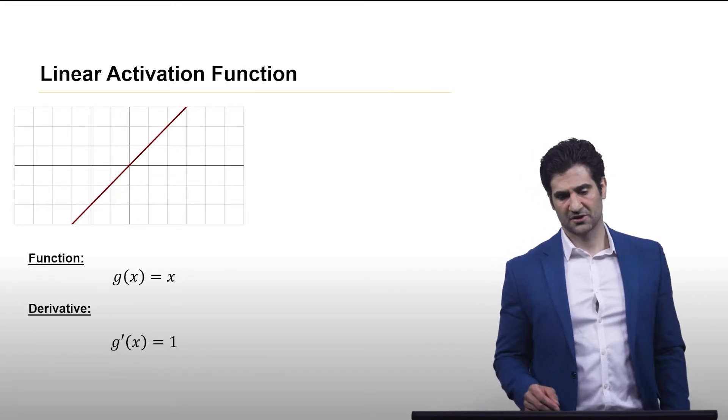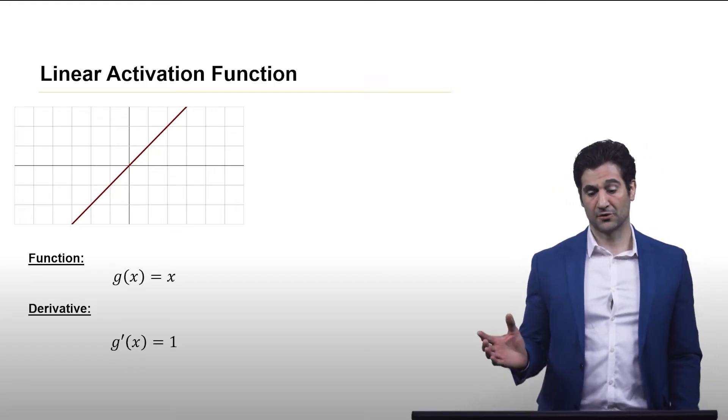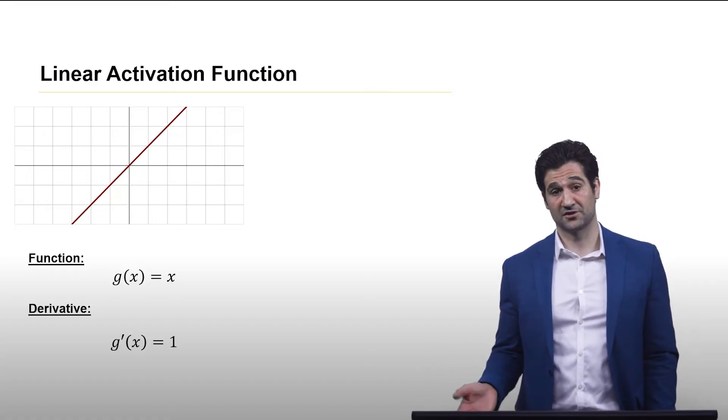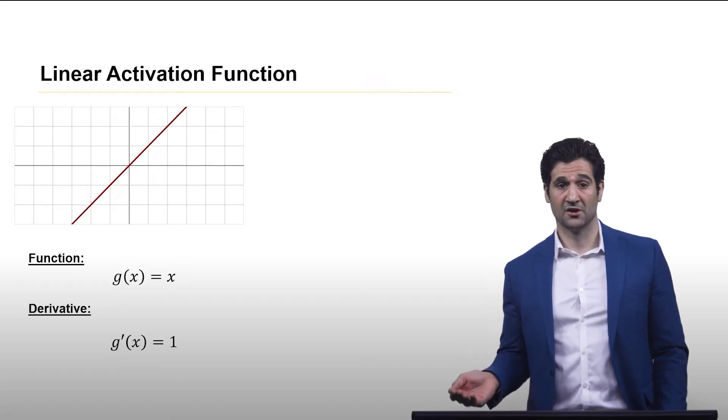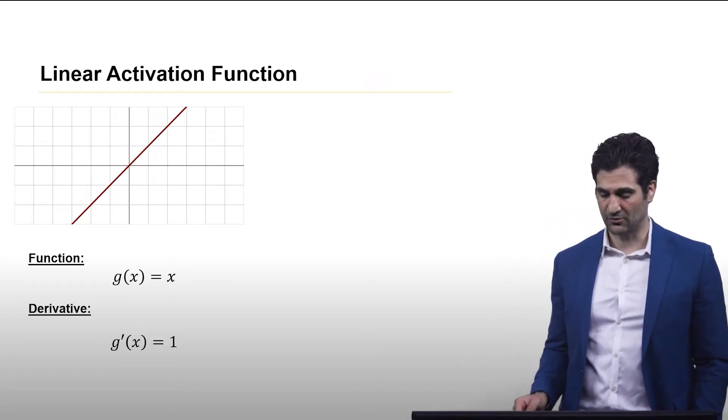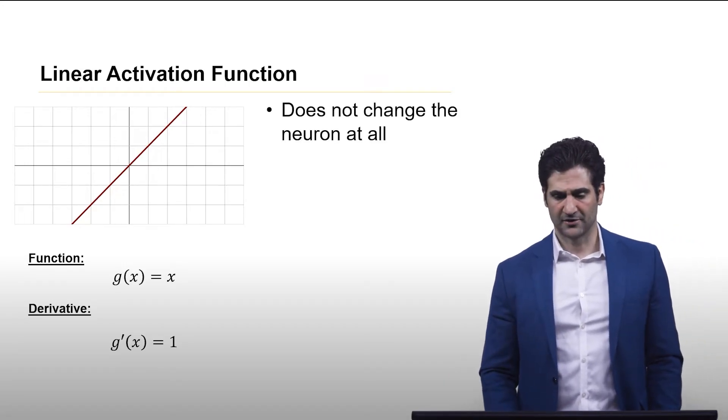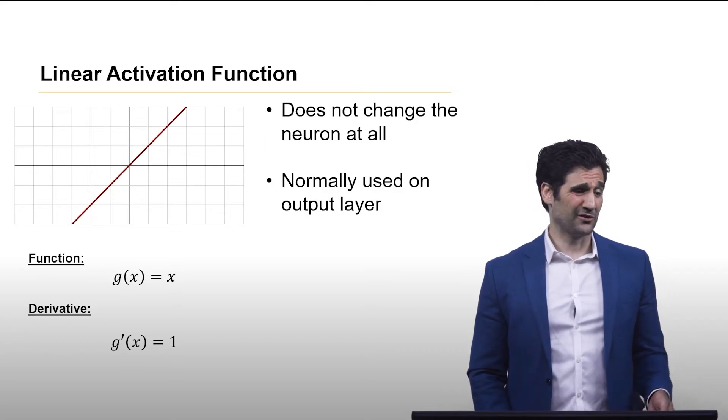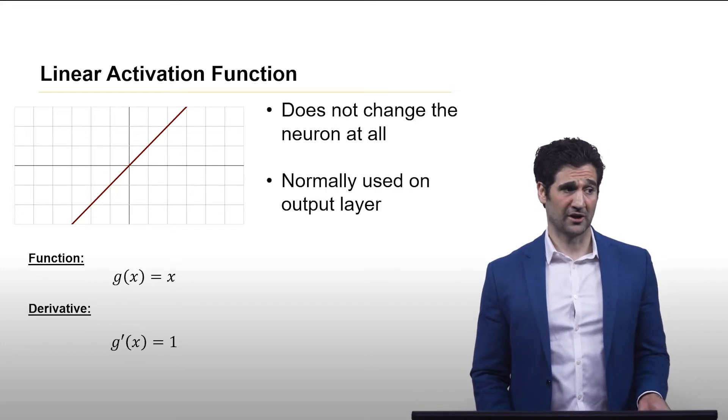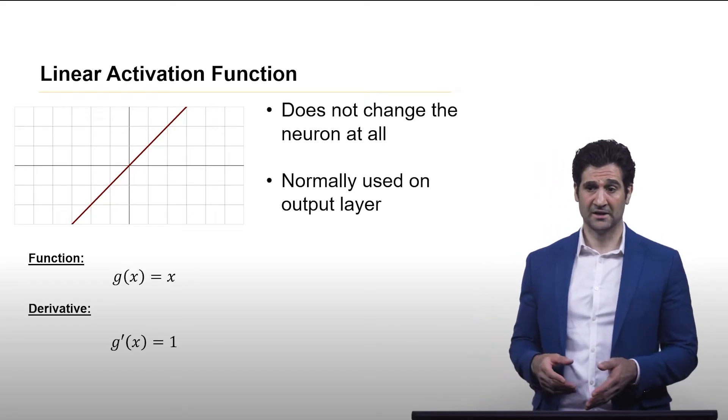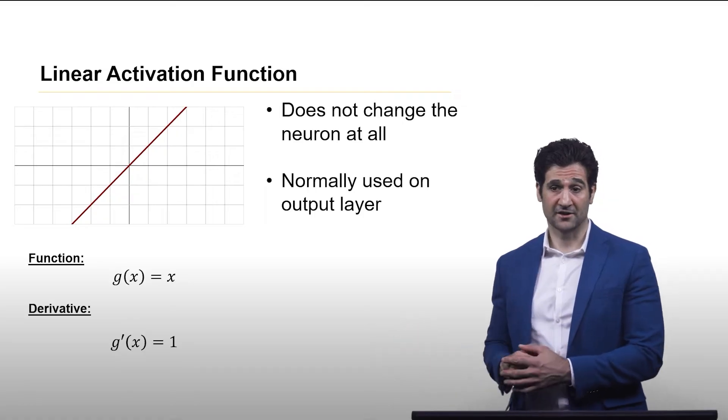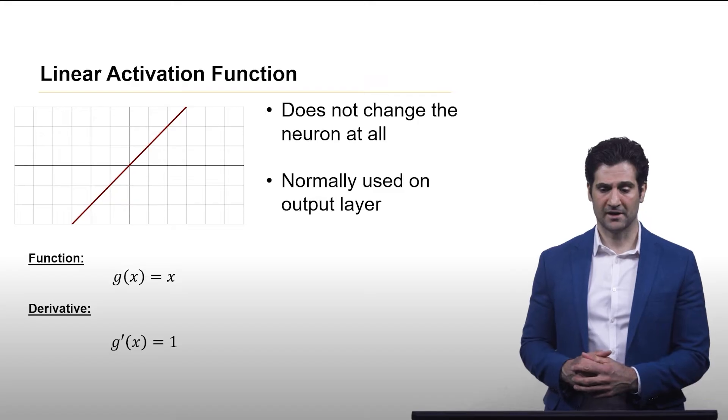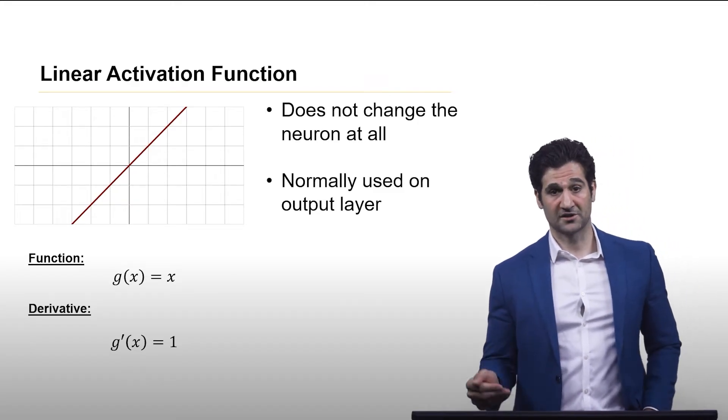So the first is the most simple activation function. That's just the linear activation function. It's just g of x equals x. This does not change the neuron at all, and it's generally only used as part of an output layer, just as a way to combine maybe that last hidden layer of analysis done by the network in a single output.